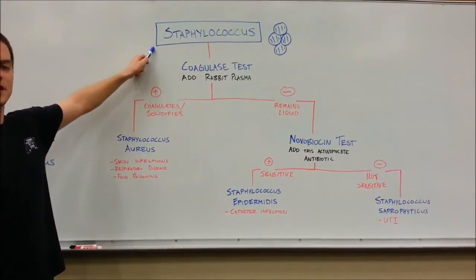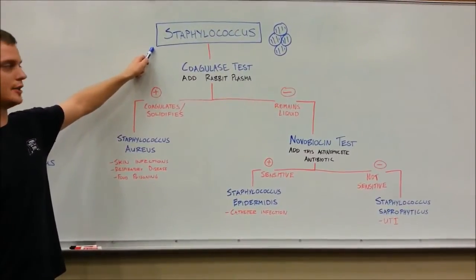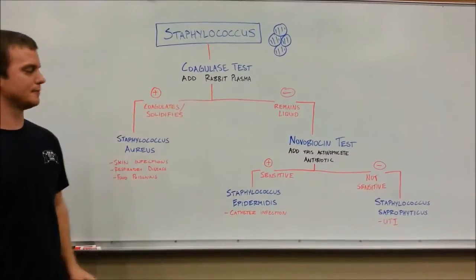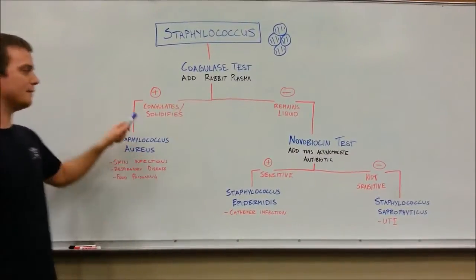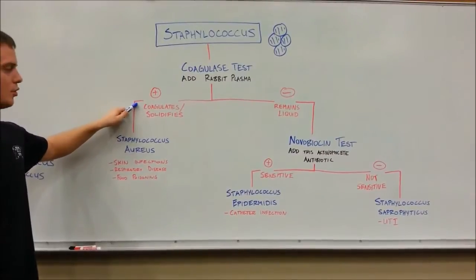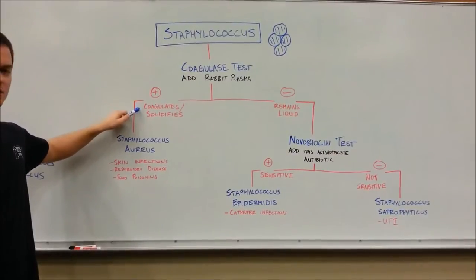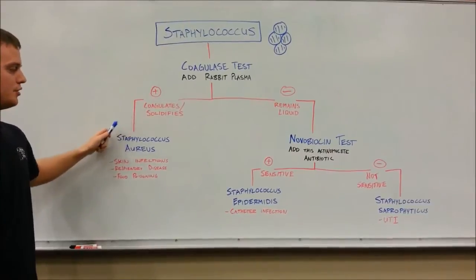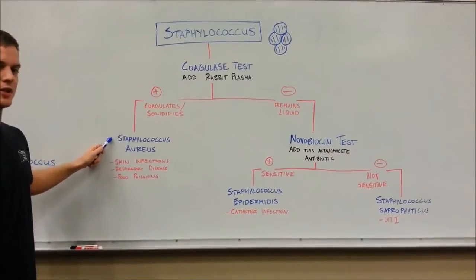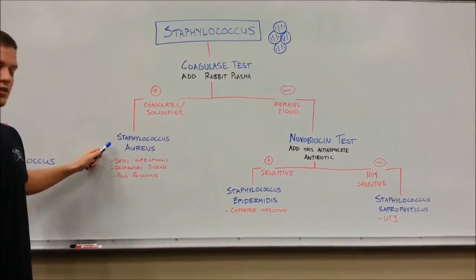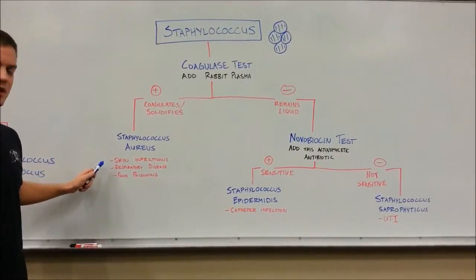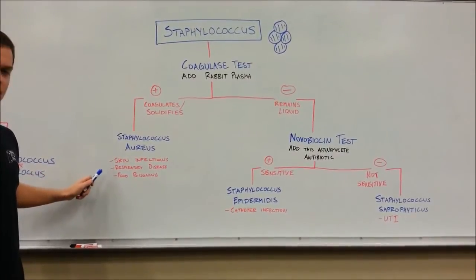Once you know you're dealing with Staphylococcus bacteria, you'll perform a coagulase test, which includes the addition of rabbit plasma. If the organism coagulates or solidifies upon addition, you'll know you have a positive coagulase test and you're dealing with Staphylococcus aureus. Staphylococcus aureus is commonly seen in skin infections, respiratory diseases, and food poisoning.